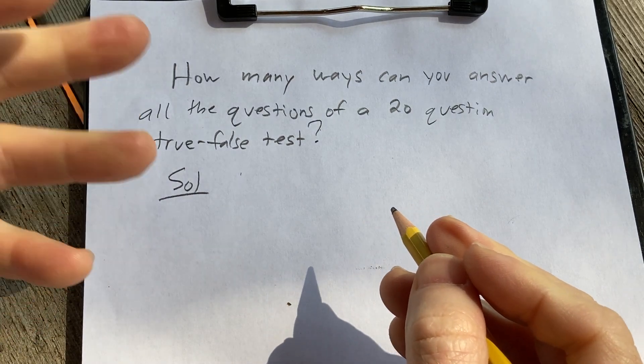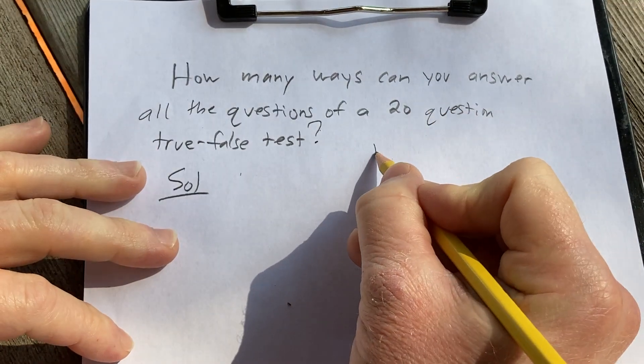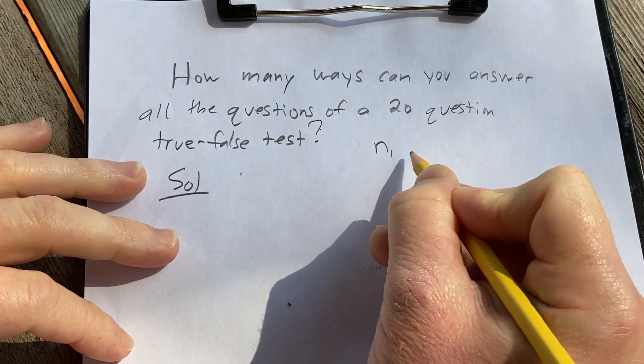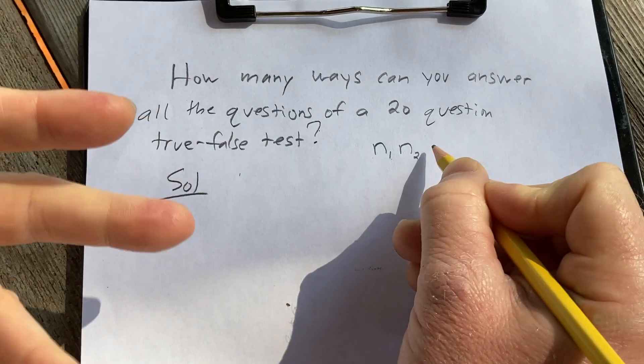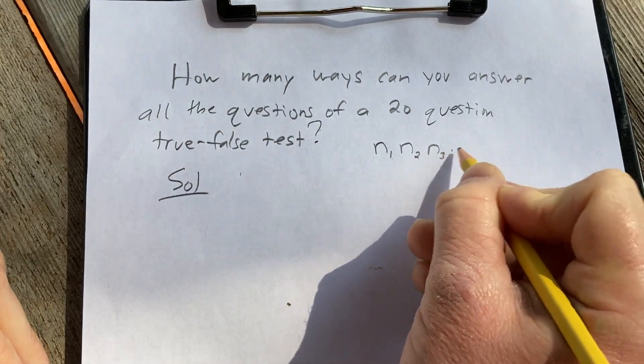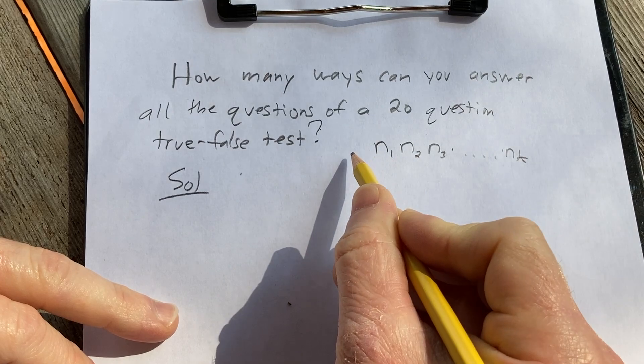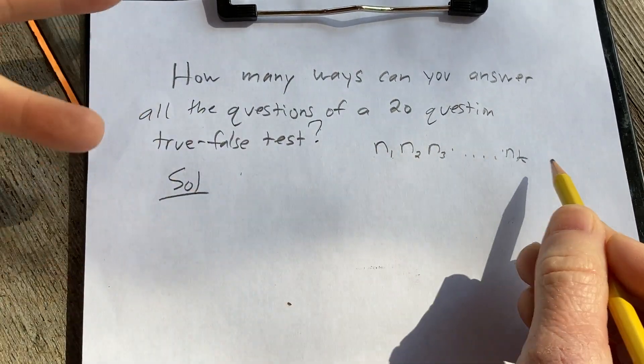The multiplication rule basically says if there's n1 ways to do something, and for each of those ways there's n2 ways to do something else, and for each of those ways there's n3 ways to do something else, etc., all the way to nk, then the number of ways to do all of these things is the product.